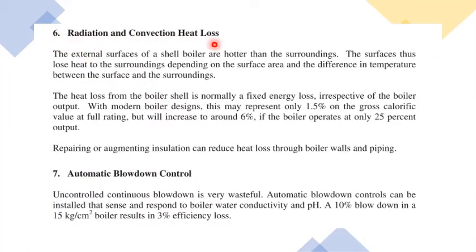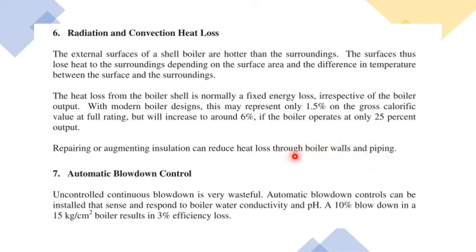The sixth point is radiation and convection heat loss. If the boiler body insulation or any component is not properly insulated, this leads to radiation and convection heat losses. These must be addressed promptly. Repairing or augmenting insulation can reduce heat loss through boiler walls and piping, leading to better boiler efficiency.